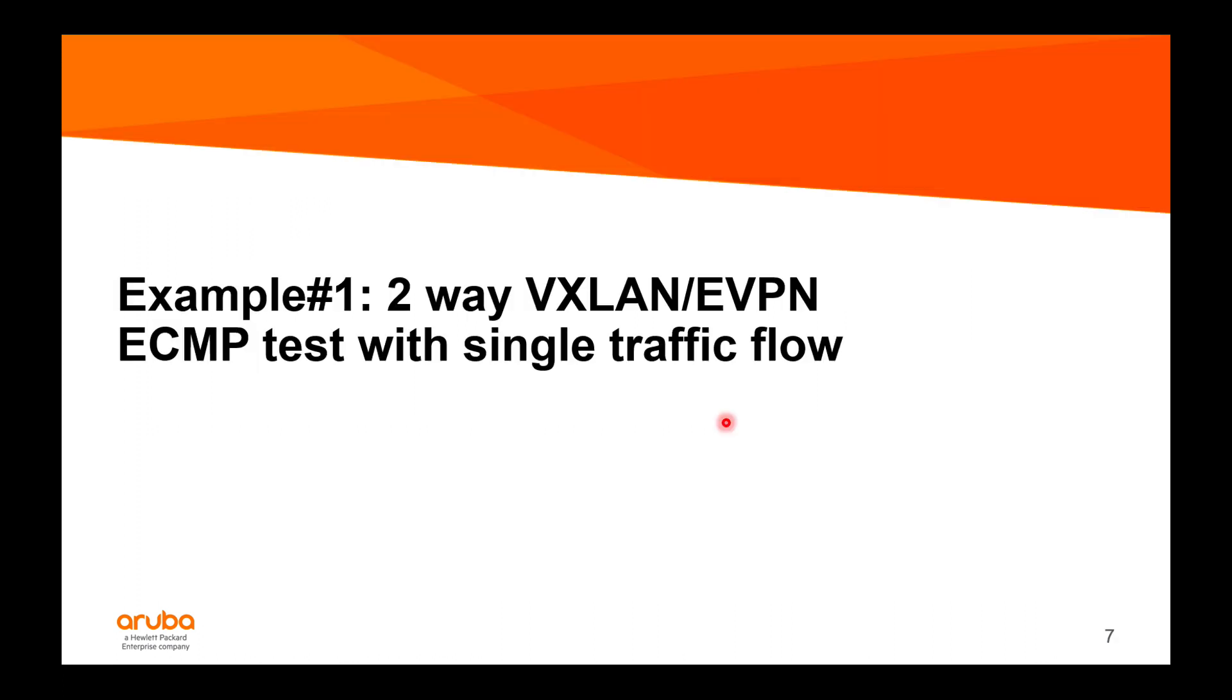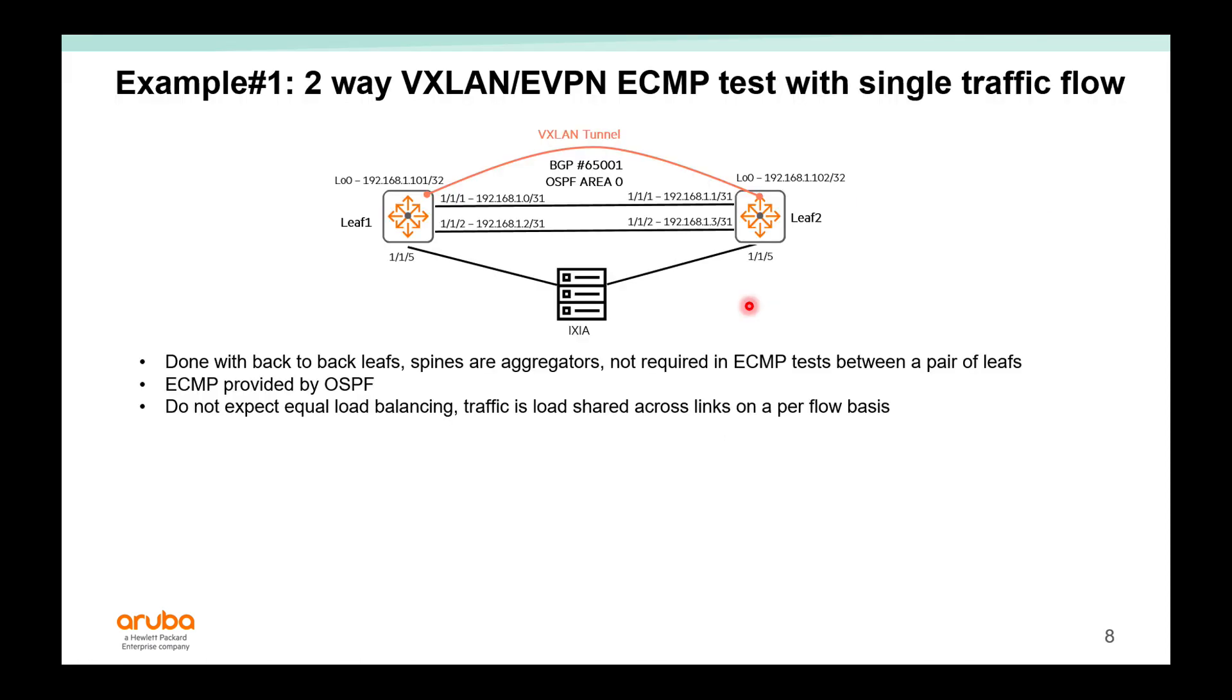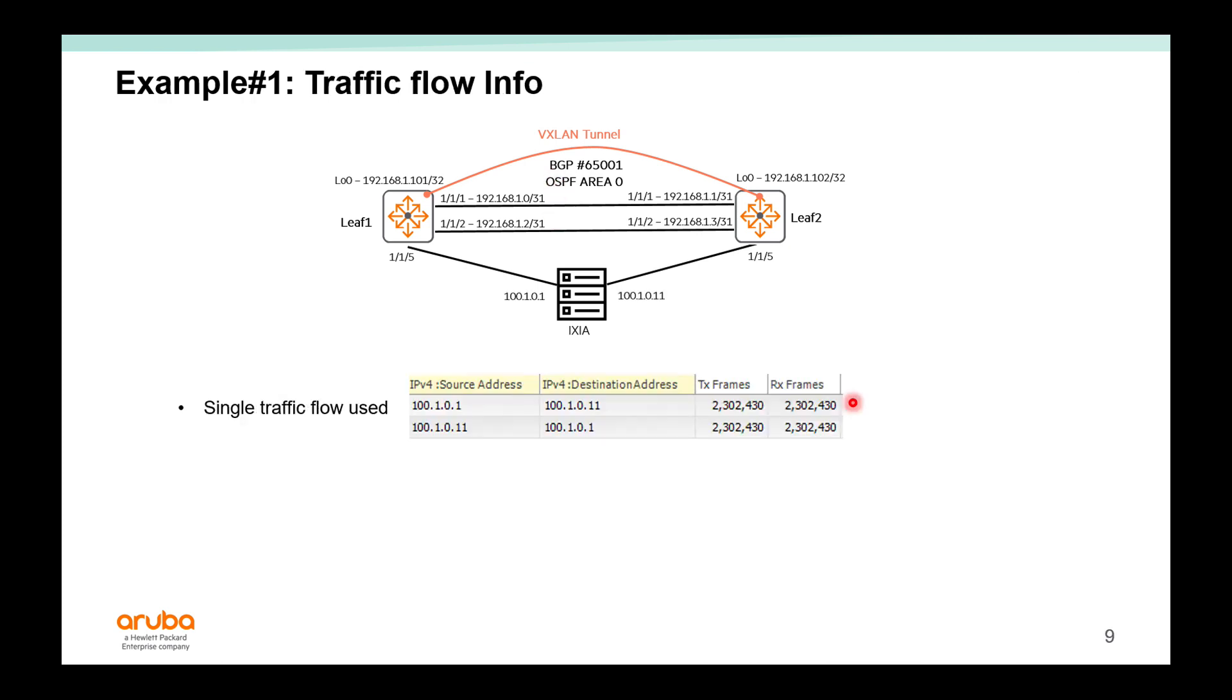In the first example, let's look at 2-way VXLAN EVPN ECMP with a single traffic flow. In this example we have back-to-back leafs because the spines are really aggregators. ECMP is same from the leaf point of view - you have two uplinks, it's considered 2-way ECMP. You have four uplinks, that's 4-way ECMP. ECMP is provided by OSPF, and do not expect equal load balancing. Traffic is load shared across the links on a per-flow basis.